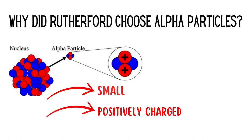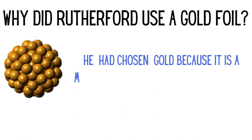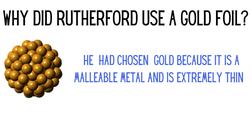Why did Rutherford choose alpha particles instead of using any other particles? He chose alpha particles because they were small and positively charged, which would allow him to test Thomson's model of an atom. Another question that arises here is why did Rutherford use a gold foil? He had chosen gold because it is a malleable metal and is extremely thin.